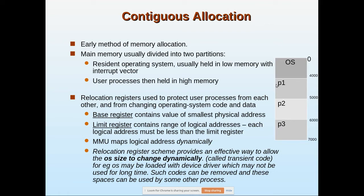The MMU — the memory management unit — maps logical addresses dynamically. For process P1, the logical address is 0, 1, 2, 3, up to 1000. For P2 it is again 0 to 1000. These logical addresses are mapped to actual physical addresses — for example, logical address 0 of P1 maps to physical address 4001, and so on. This is called mapping, and it is done dynamically because a process may be moved to other locations.